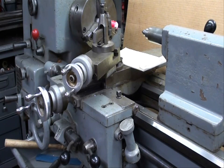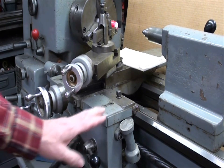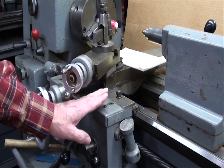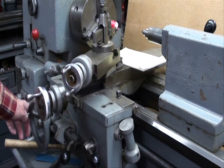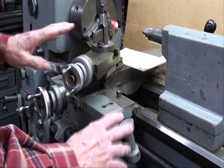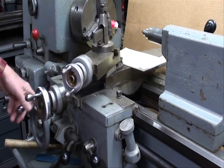Another comment I'm getting is people saying, why don't you just leave your half nut engaged all the time when threading and then just reverse the lathe to back out? That way you're not going to lose your place. There's a couple of reasons for not doing that. I'm not running the lathe at the moment, but I do have the half nut lever engaged. Notice how much play there is in there.